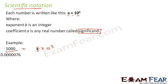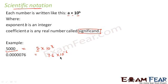Let us take another example: 0.000076. How do we write it in scientific notation? We write it as 7.6 × 10⁻⁶. The power of 10 is not considered in counting significant figures, so here the number of significant figures is 2.